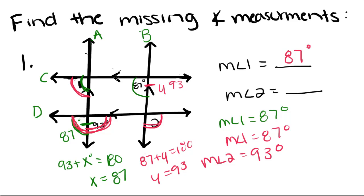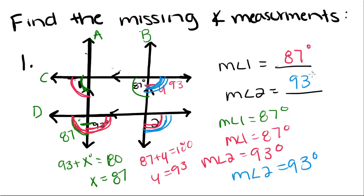Since parallel lines C and D are cut by transversal B, this angle has to be congruent with its corresponding angle. So the measure of angle 2 has to be 93 degrees. Either way you do it, you'll get the right answer — one way might just be a little quicker than the other.